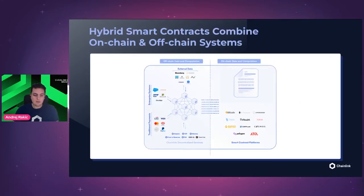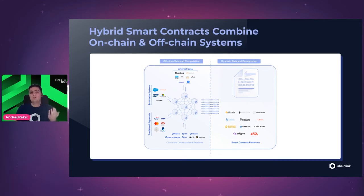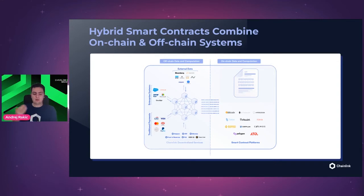And finally, we come to hybrid smart contracts. In one sentence: a hybrid smart contract combines both on-chain data and computation with off-chain data and computation. They are extremely powerful. There's a variety of Chainlink products that can help you with that off-chain component, and I'll try to explain them so you can feel how to create those hybrid smart contracts.